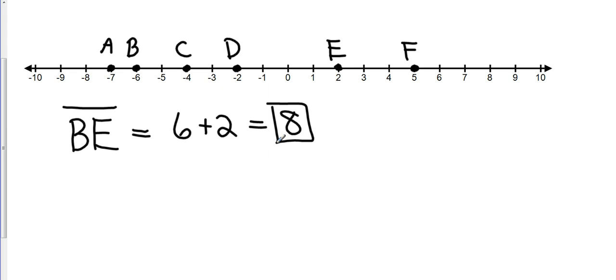So if I ask you to find out what AF was, go ahead and pause the video and find out what AF is and then we'll come back and see if you got it correct. So the distance from A to 0 is going to be seven spaces. The distance from 0 to F is going to be five spaces. So that's going to give me a total distance of 12 spaces. Again, distance is always positive. It cannot be negative.